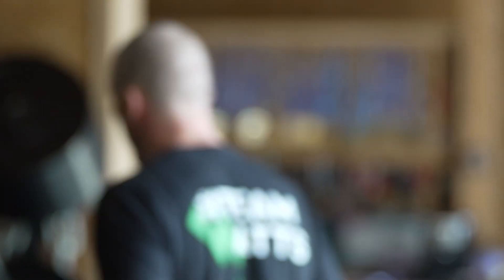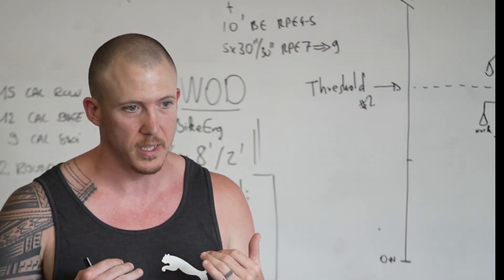Going back to the initial question — how do you train a delivery limited athlete versus a utilization limited athlete? I don't use this model currently because I think it's too restrictive to just ask: do we need to train the heart or the muscles? We need to train both. I would rather look at the intensity spectrum, the profile of the athlete, his predispositions, and what he's currently good at. If you're good at short stuff, you need to do more longer stuff. If you're good at long stuff, you need to do more shorter stuff.